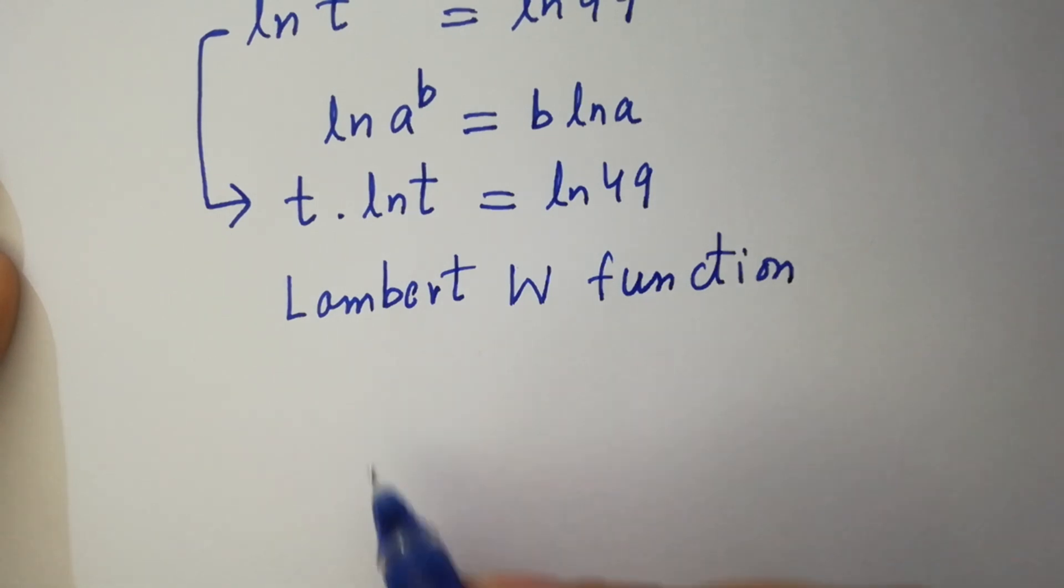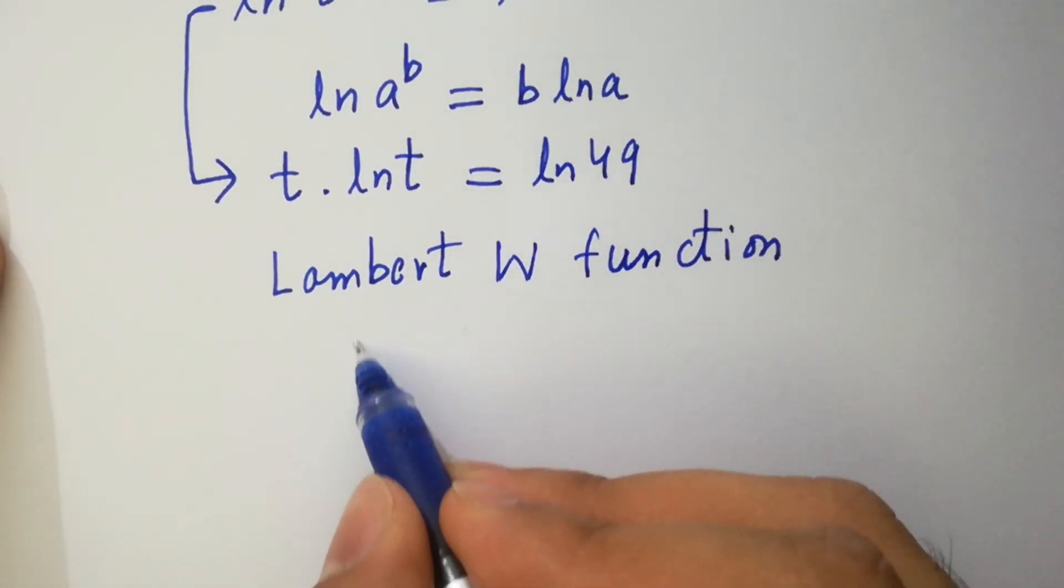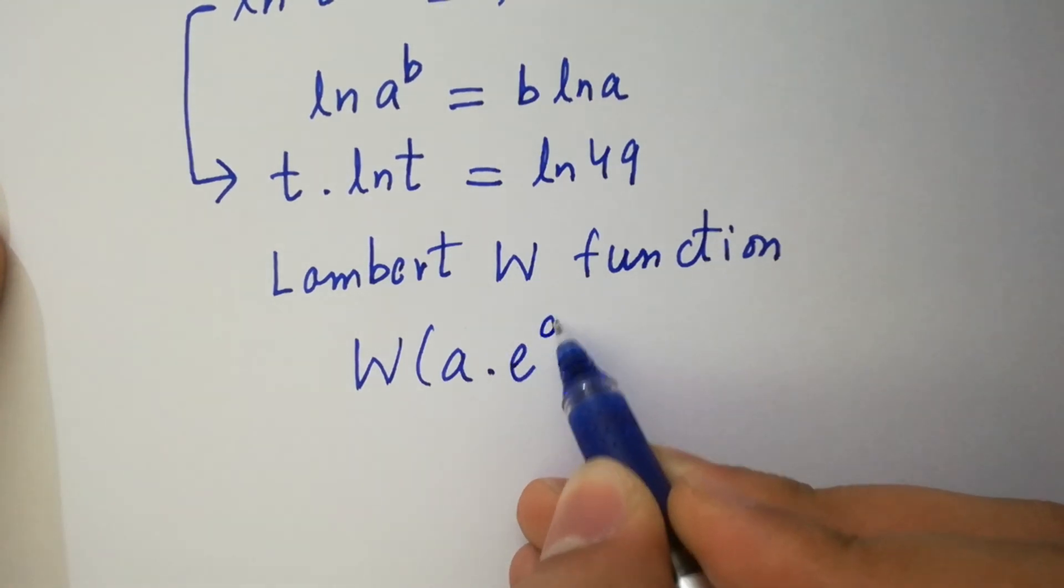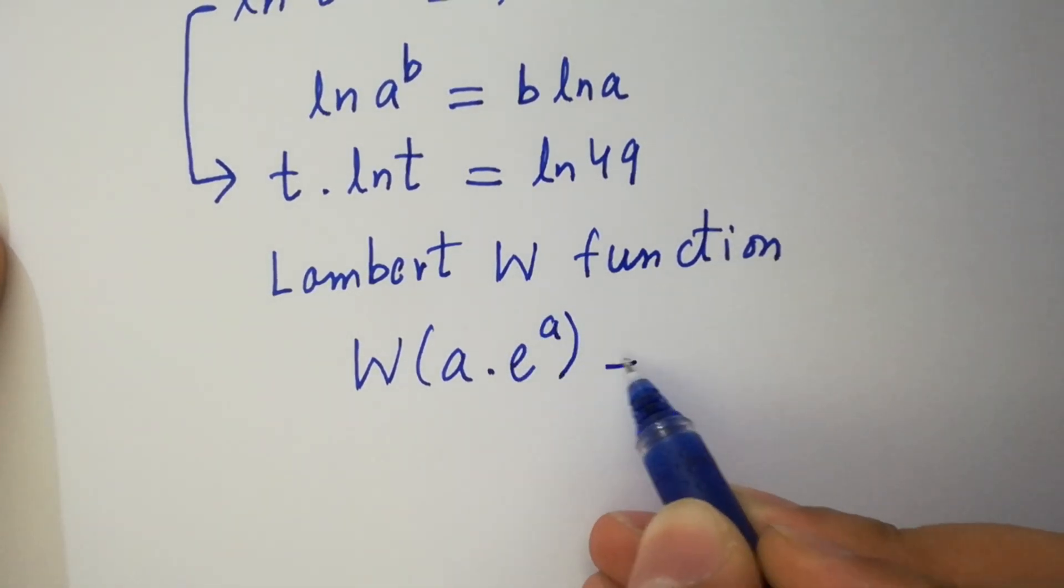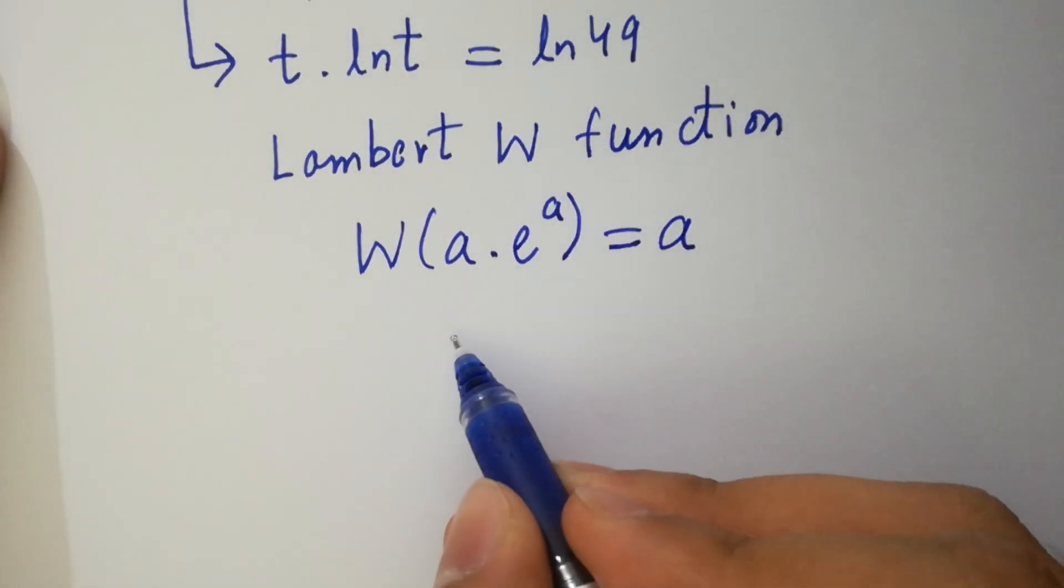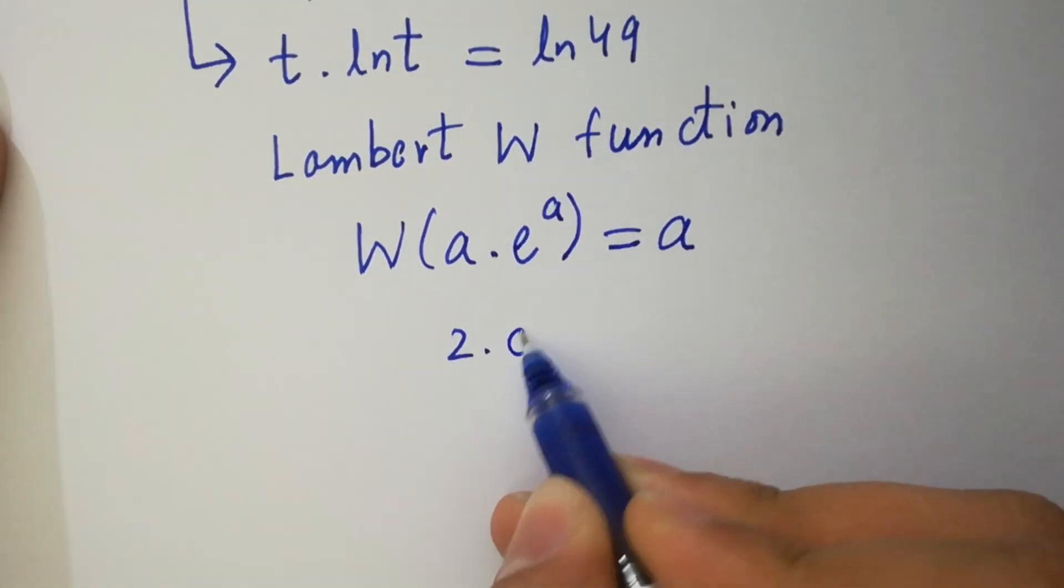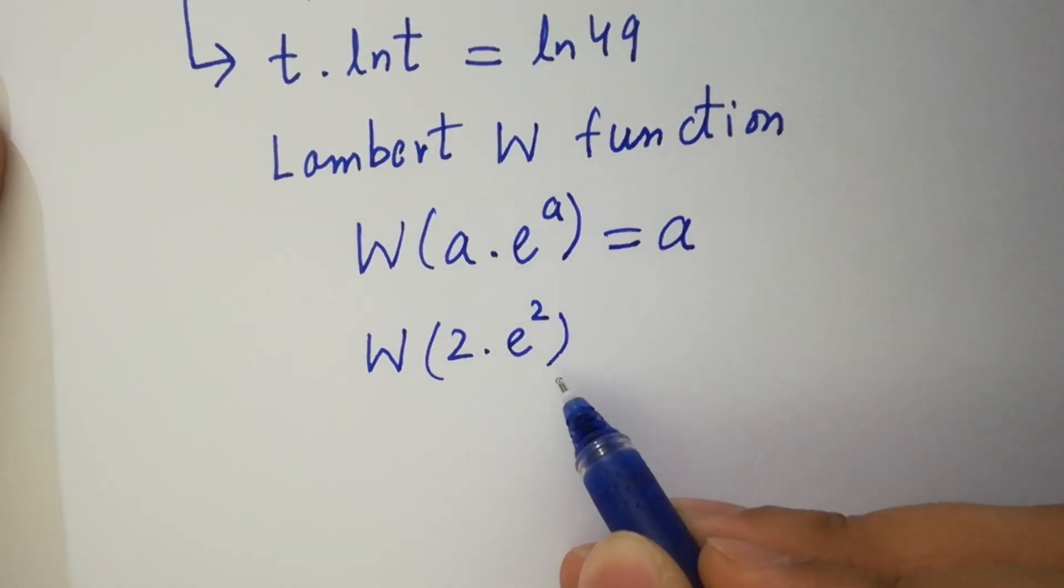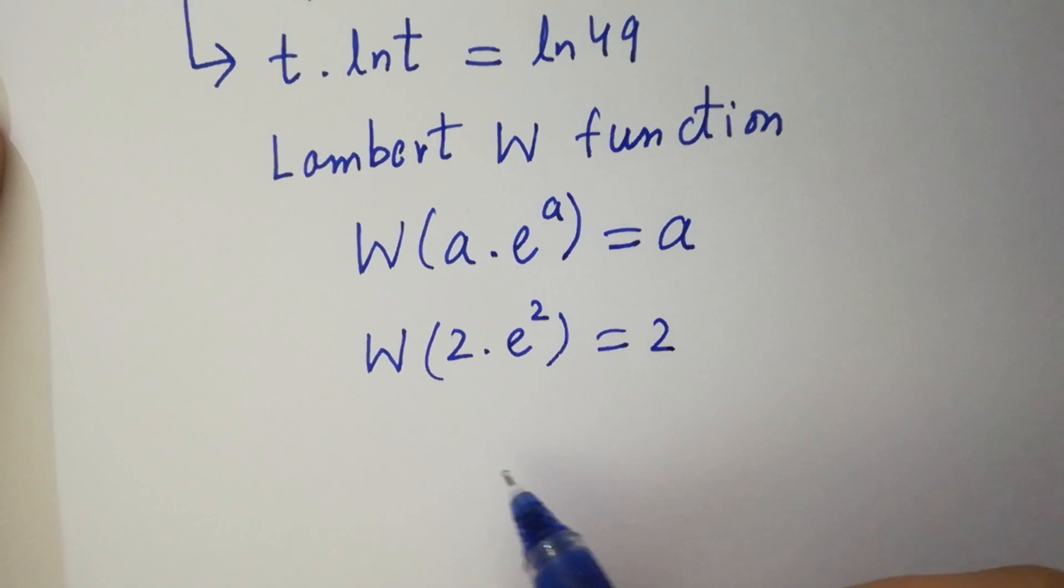Which is W of a times e to the power a equals a. Like if you have 2 times e to the power 2, apply Lambert W function, it will be equal to 2. I hope you understood.